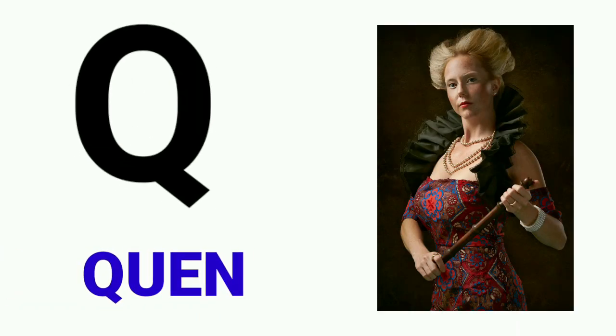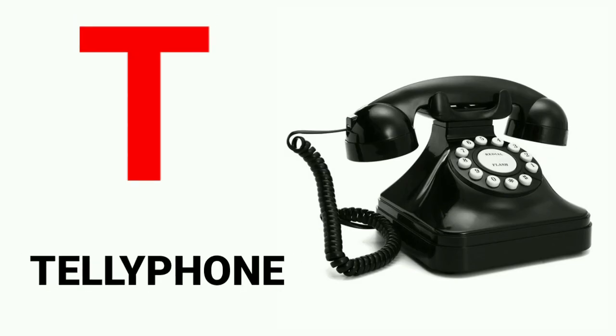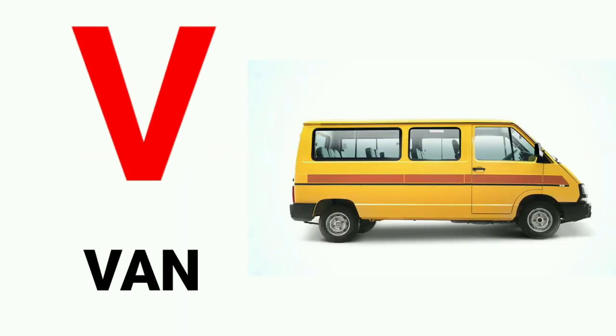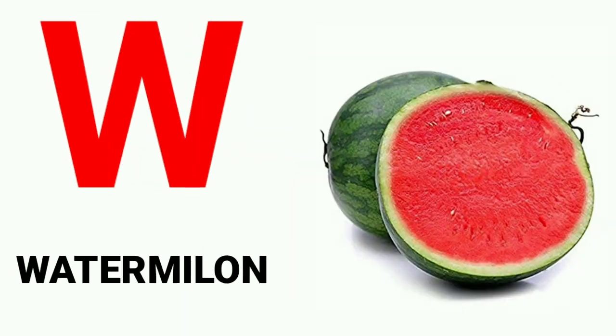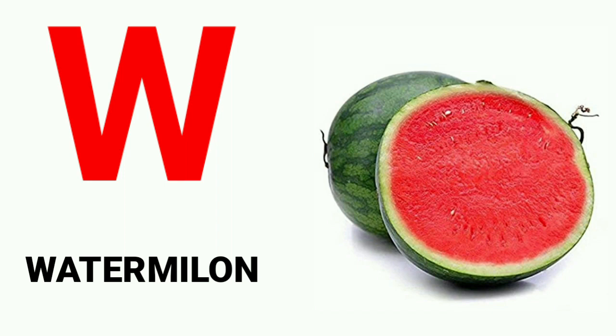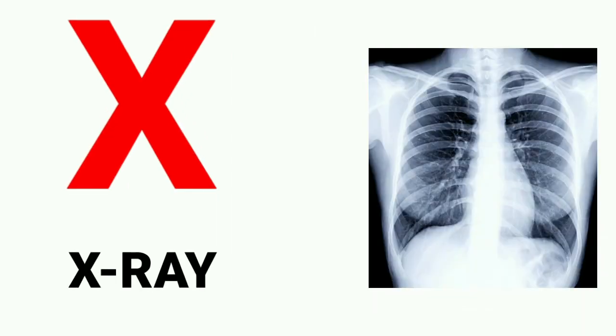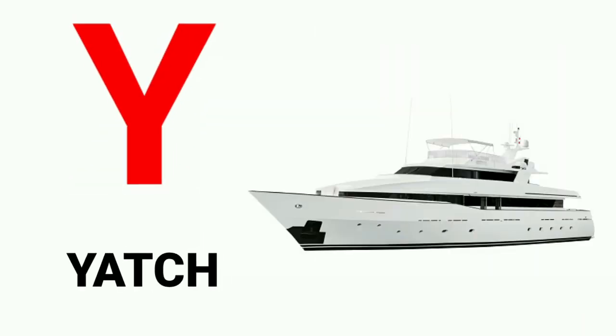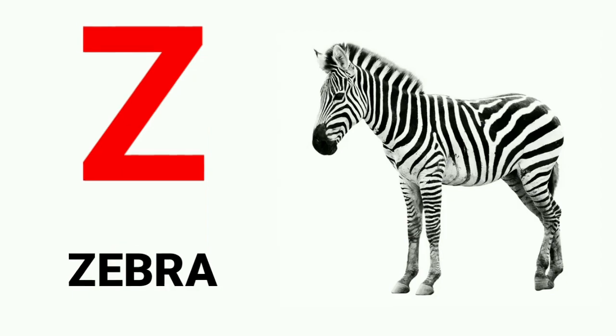Q for queen, R for rose, S for sun, T for telephone, U for umbrella, V for van, W for watermelon, X for x-ray, Y for yacht, Z for zebra.